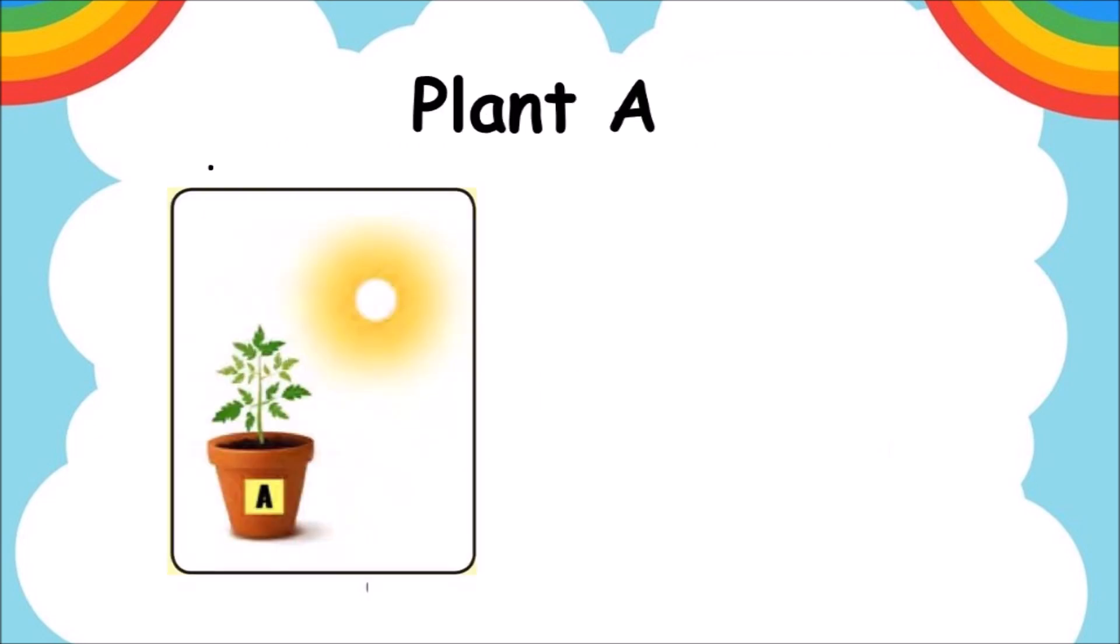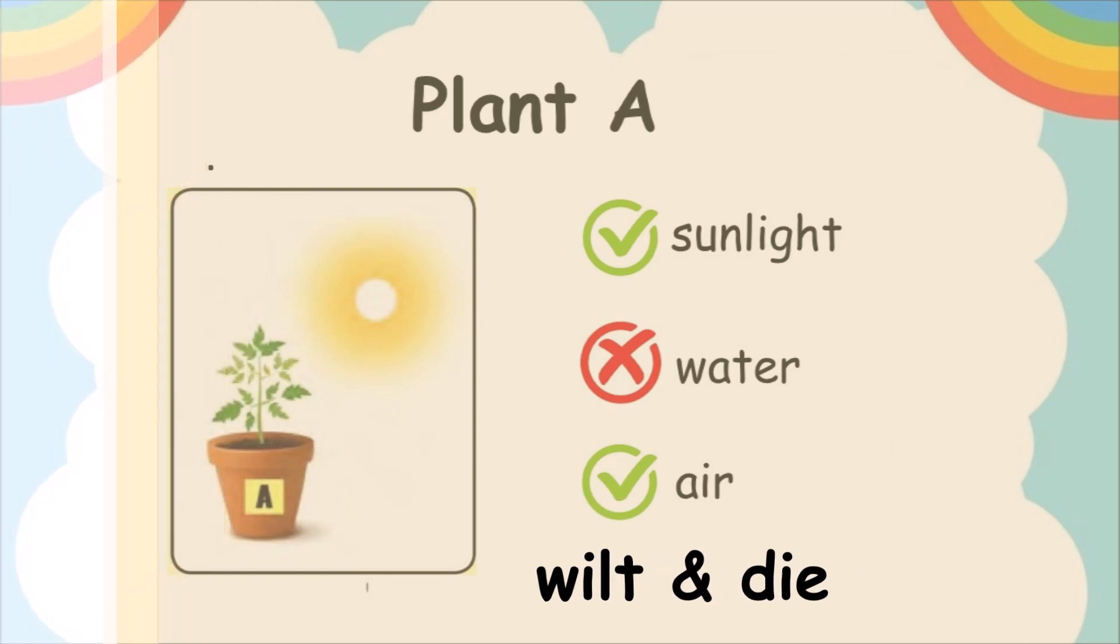Now let's look at Plant A. Plant A receives sunlight and air but does not receive water. So what will happen to Plant A? After 2 weeks, Plant A will wilt and die.